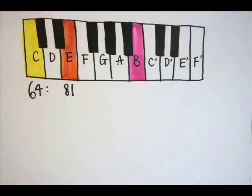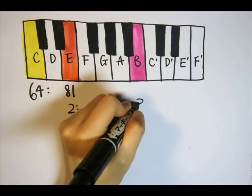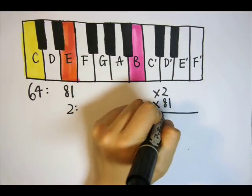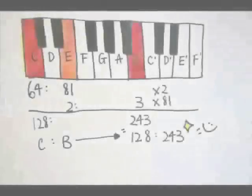E to B is another perfect fifth interval with a frequency ratio of 2 to 3. Making use of the frequency ratio of C to E equals 64 to 81, we can deduce that the ratio of C to B is 128 to 243.